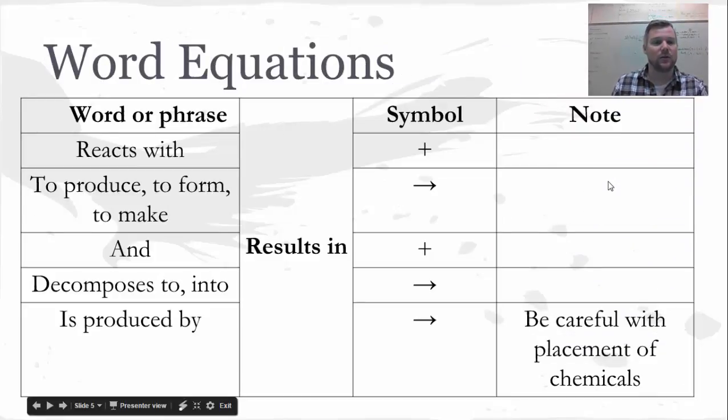For word equations which we just saw an example of there are some key words that mean symbols so if you can kind of think about what some of those words and patterns mean that makes you more able to transfer words back into a symbolic version of that chemical equation. So reacts with is going to mean that there's a plus sign after whatever was mentioned before of this phrase. To produce means an arrow or to form means an arrow or to make means an arrow and there's going to be a plus sign.